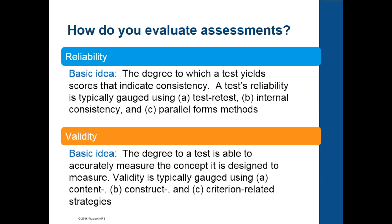Moving on to validity — the validity of a test gets at the degree to which a test is actually measuring the concept that it is intending to measure. It's measured using three different approaches: one is content-related validity, second is construct-related, and third is criterion-related strategies. I won't go in depth into each of those as they will come in later videos.